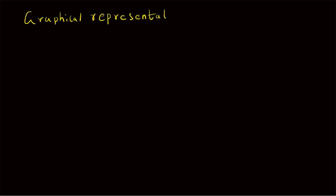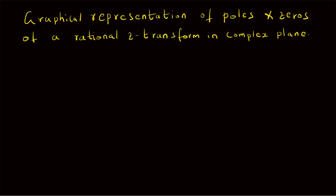Welcome. In this short video, let us look at the graphical representation of poles and zeros in a complex plane for a Z transform. Generally, zeros are represented by circles and poles are represented by crosses.